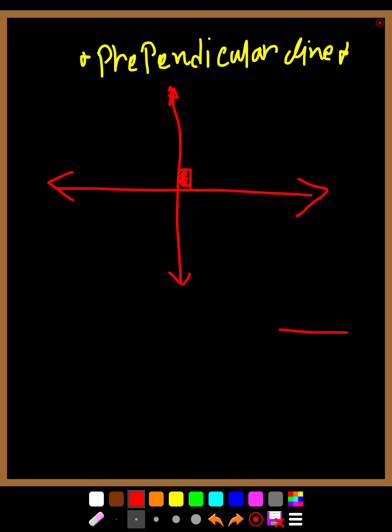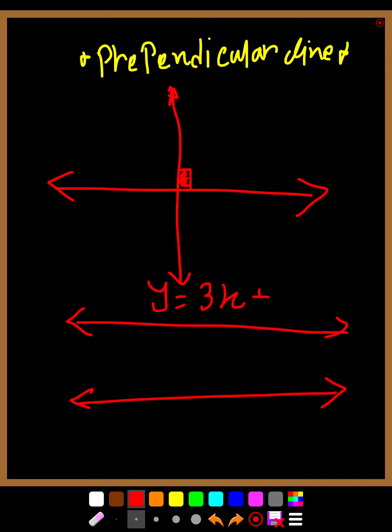Before this, we talked about parallel lines. If you have two parallel lines, for example the first line has the equation 3x plus 5, if they are parallel lines the gradient will be the same. So the gradients are equal, and they differ only in the y-intercept.